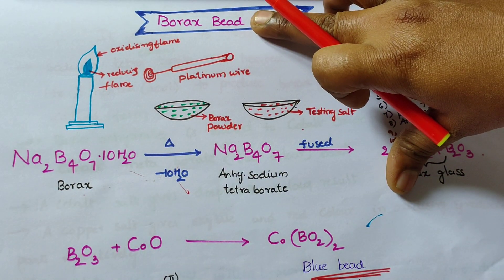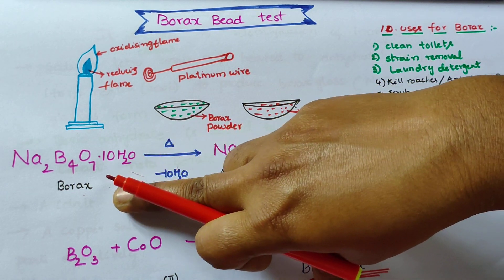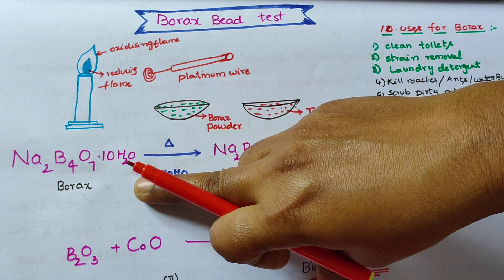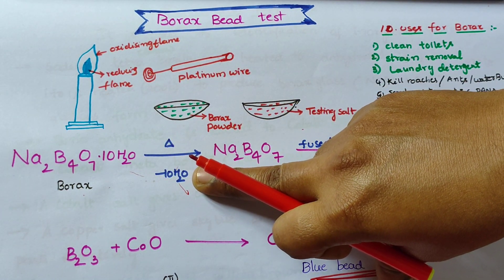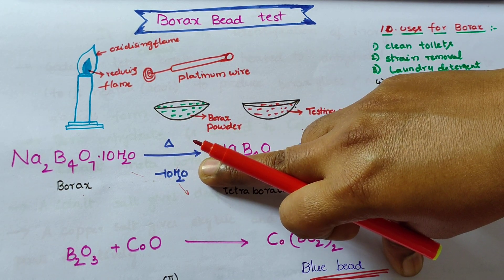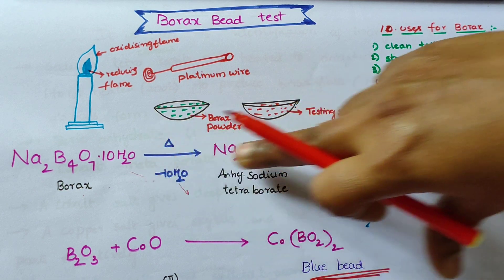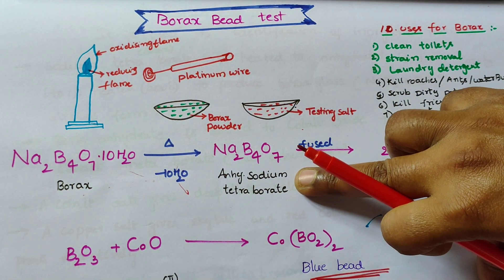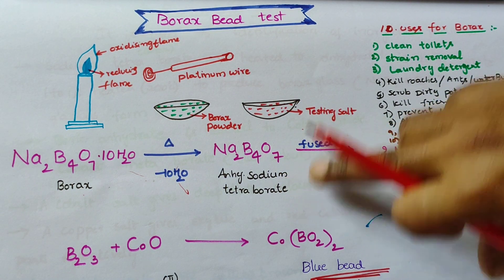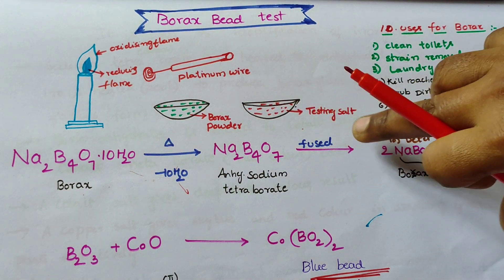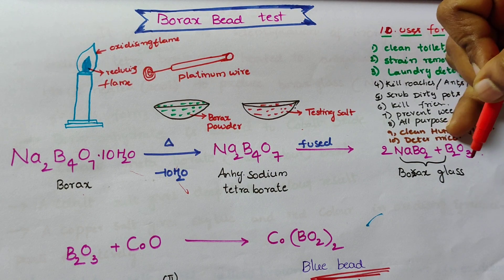In the Borax bead test, we take Borax — it is a hydrated molecule. When Borax is heated, it removes water molecules. Ten water molecules can be removed from sodium tetraborate, forming anhydrous sodium tetraborate, which is then fused to give Borax glass.